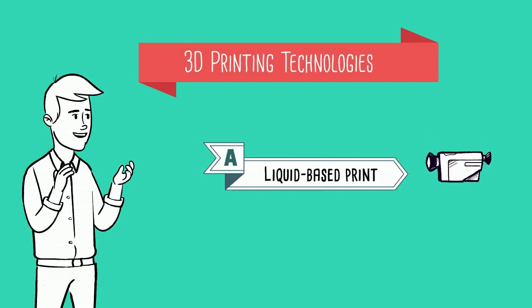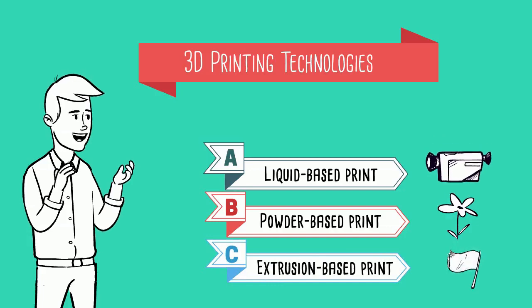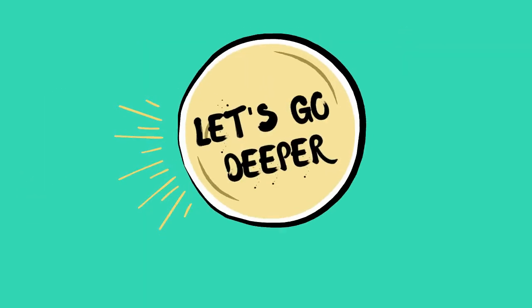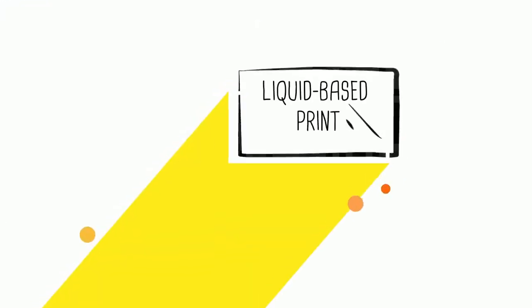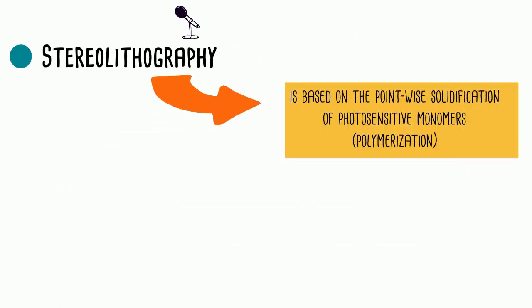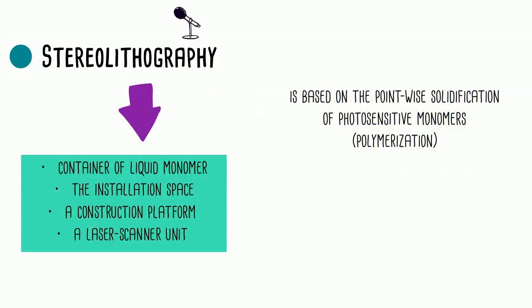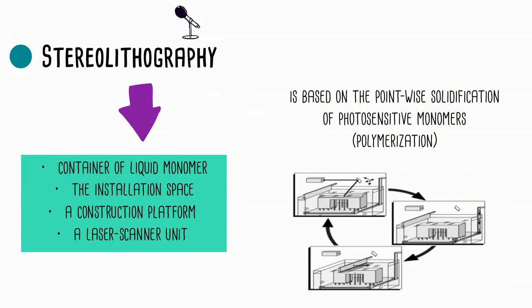The first is the liquid based print, the second is the powder based print, the third is the extrusion based print. Liquid based print: stereo lithography. Laser stereo lithography is based on the pointwise solidification of photosensitive monomers through polymerization. It consists of a container of liquid monomer, the installation space, a construction platform, and a laser scanner unit.